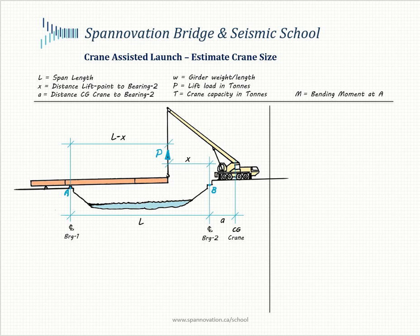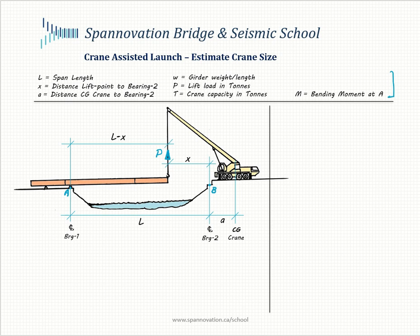Before we get into working on this procedure, let's define a few variables. The span length is capital L, the distance of the CG of the crane from point B is small a, the distance of the pick point from point B is small x, which means the launched length from point A would be equal to capital L minus x. If at any point you'd like to refer to any of these variables, you can go to the top section right here and you would get a description.